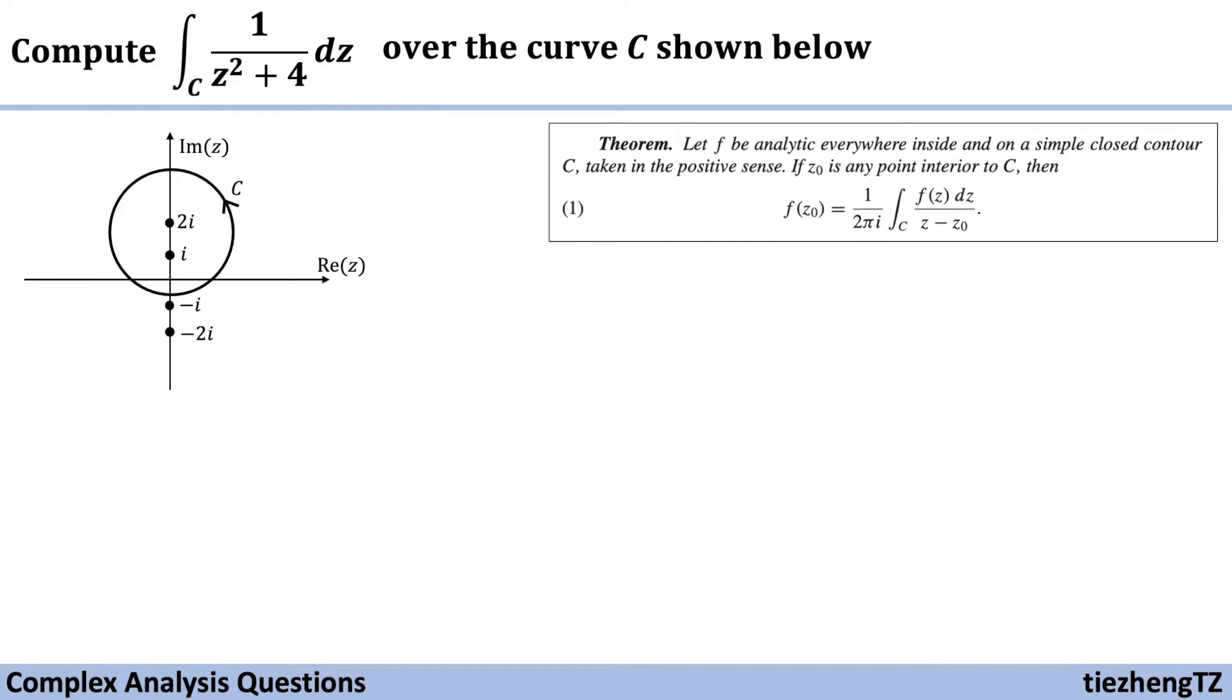Here is the theorem. Let f be analytic everywhere inside and on a simple closed contour C, taken in the positive sense, and if z₀ is any point interior to this contour C, then we have f(z₀) equals 1 over 2πi times the integral of f(z) dz over z minus z₀.